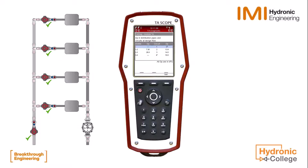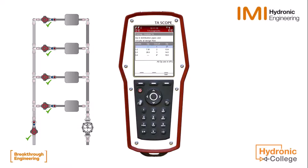Here we can see the calculated differential pressure in all areas of the module when design flow is achieved. These values can be used for diagnostics. For example, the pressure drop between circuit 2 and 3 is relatively high at 26.8 kPa, which could possibly indicate a blocked pipe or similar. If you are measuring on a project calculated in HiSelect, you will be given a warning if these figures differ from design values.